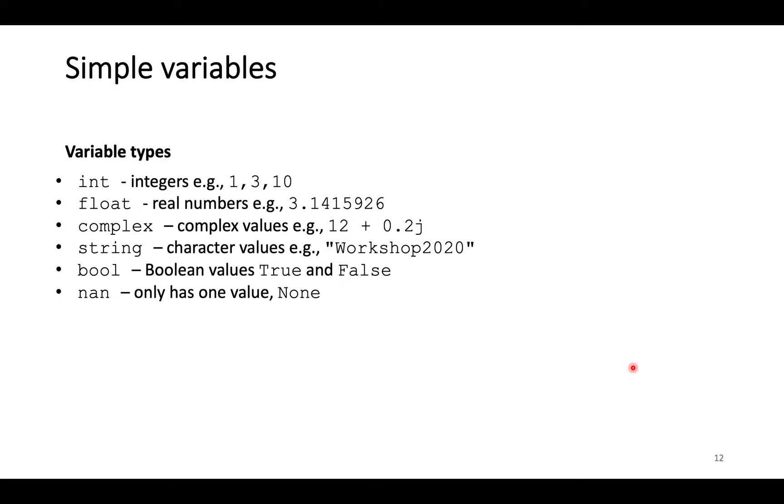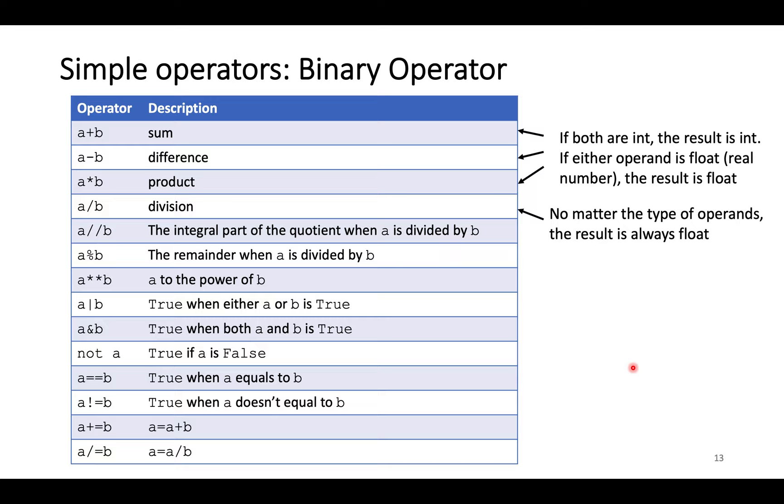Now we will learn the vocabulary of Python from the very basic level. The primitive variables in Python has six types. Three are for numerical values. One is for character values. One is for boolean values. There are either true or false. The final one is special because it only has one value, which is none.